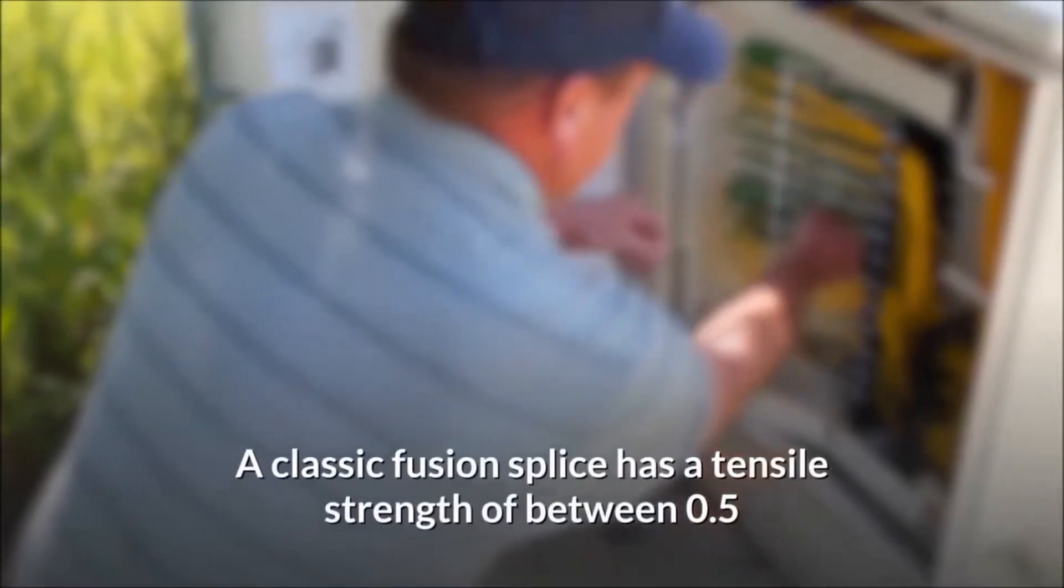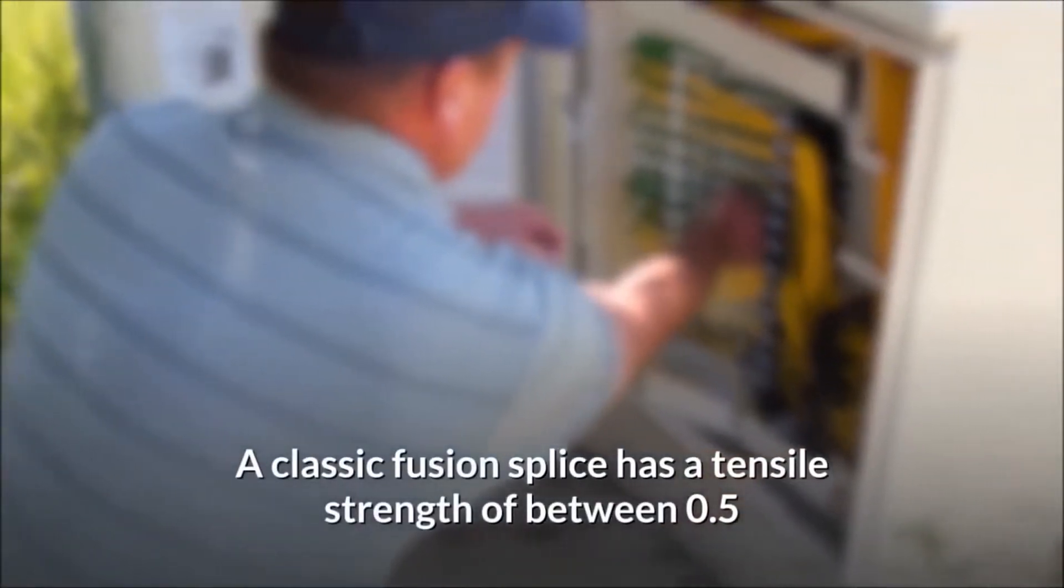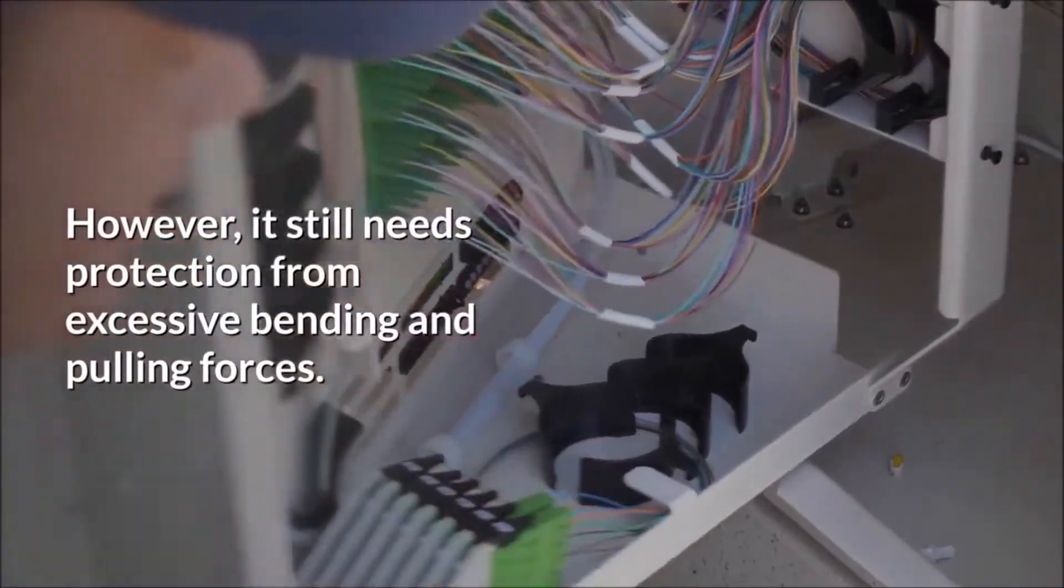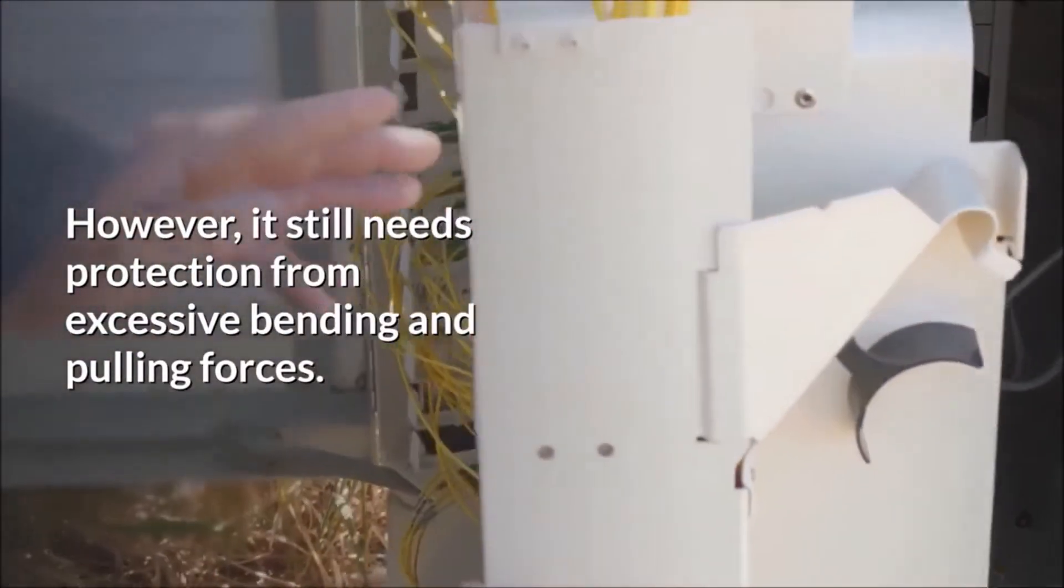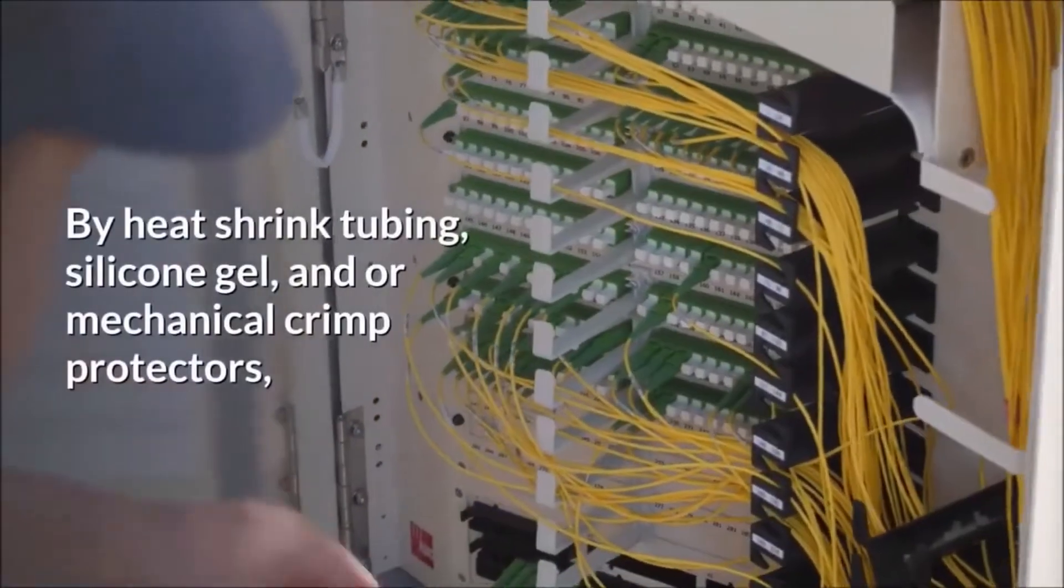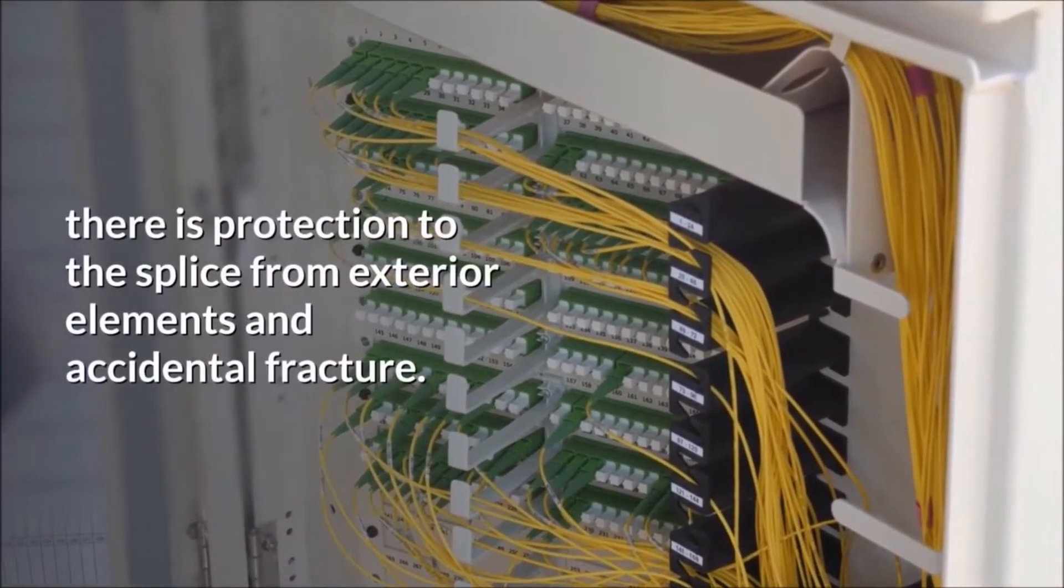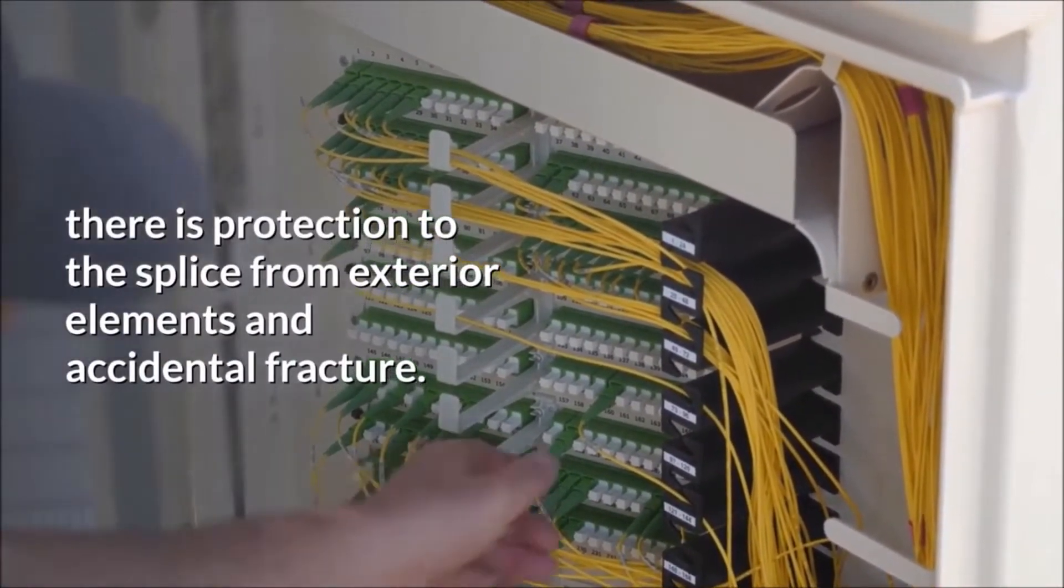Step 4: A classic fusion splice has a tensile strength of between 0.5 and 1.5 pounds and is difficult to break through usual handling. However, it still needs protection from excessive bending and pulling forces. By heat shrink tubing, silicone gel, and or mechanical crimp protectors, there is protection to the splice from exterior elements and accidental fracture.